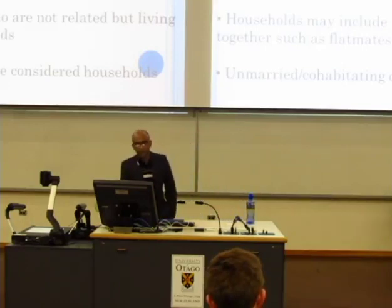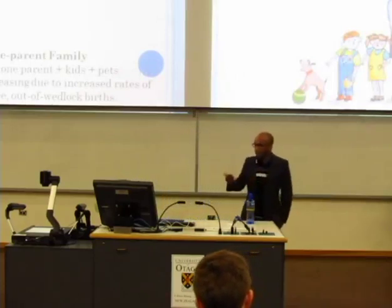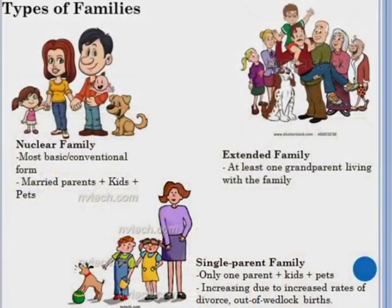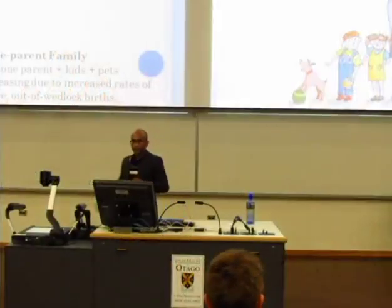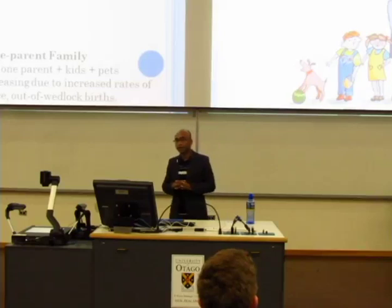When we hear the word family, we understand it in different ways. There are different kinds of families. First, we have nuclear families. We have extended families and, increasingly nowadays, we come across single parent families. A nuclear family is one or two parents, children, and even a pet — it's a small family. An extended family has at least three generations living together under one roof. Extended families used to be quite popular, and single parent families are also quite popular these days.